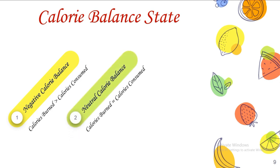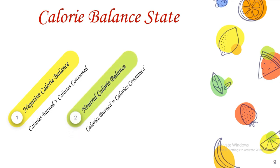The second state is neutral calorie balance, where calories burned is exactly or more or less equal to calories consumed. This state is possible — we often see friends or relatives who haven't changed at all in 10 to 15 years. Their metabolism and the way they maintain calorie consumption and calorie burning is so accurate that they neither gain too much weight nor lose too much weight.